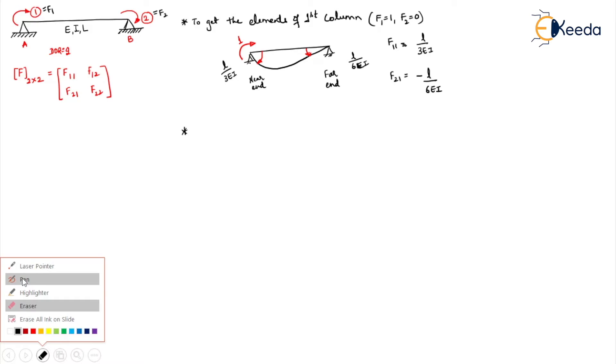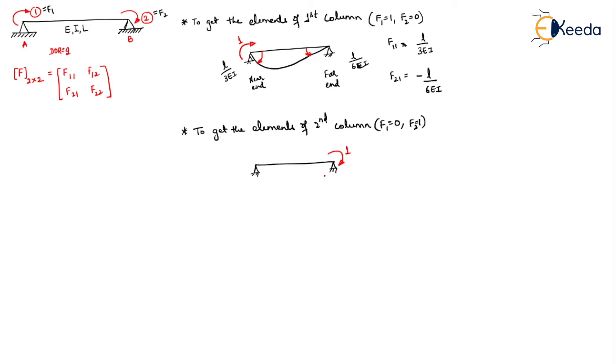Next, to get the elements of the second column, what we have to do? Unit force should be applied in the second coordinate, and the first coordinate should be equal to zero. So what will happen in that case? If this is your beam, you are applying unit force in the direction of your second coordinate like this, equal to unity.